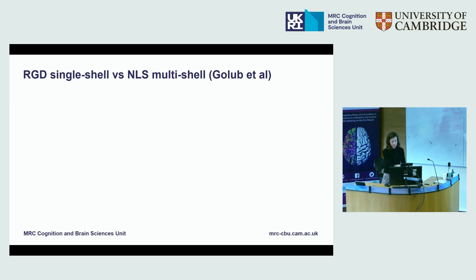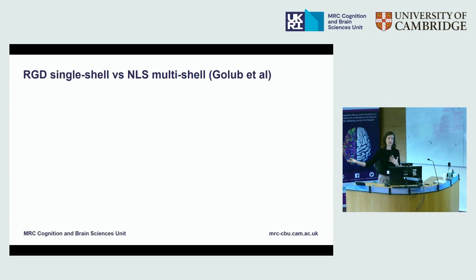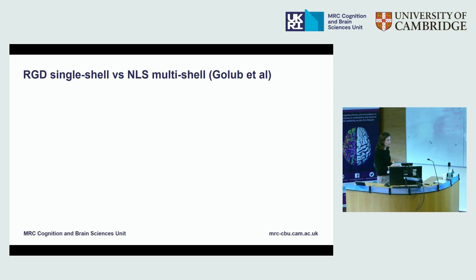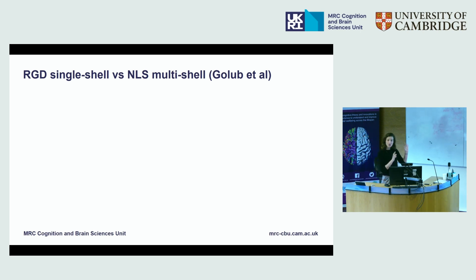For many years, people would say this model is not well posed and you shouldn't really be using it, but that was always pushed away and ignored, and more and more applications started to come in. It started with neurodegeneration, then went on to traumatic brain injury and aging. If you search the literature, there are hundreds and hundreds of papers using this regularized approach for estimating free water.